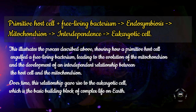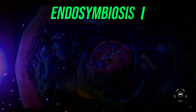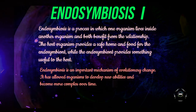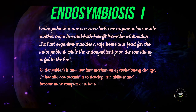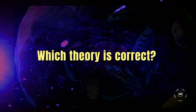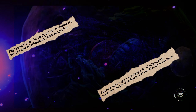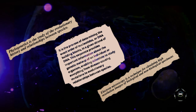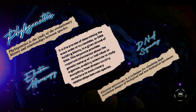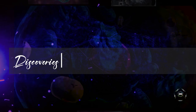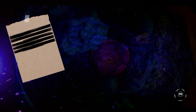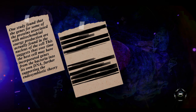But where did mitochondria come from? The answer lies in a process known as endosymbiosis, which involves one organism living inside another. Researchers have been trying to unravel this mystery for years by using various techniques like phylogenetics, electron microscopy, and DNA sequencing. And while the question is far from being solved, there are some exciting new discoveries that could help bring us closer to the answer.